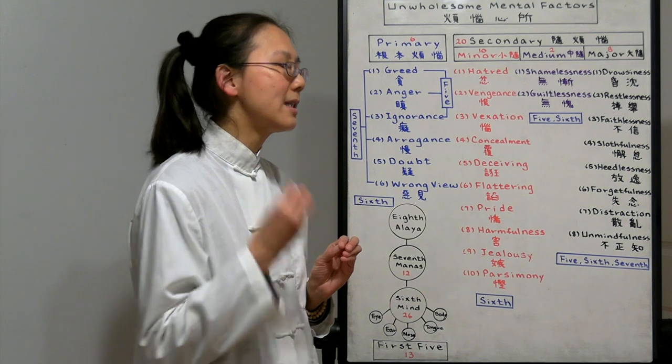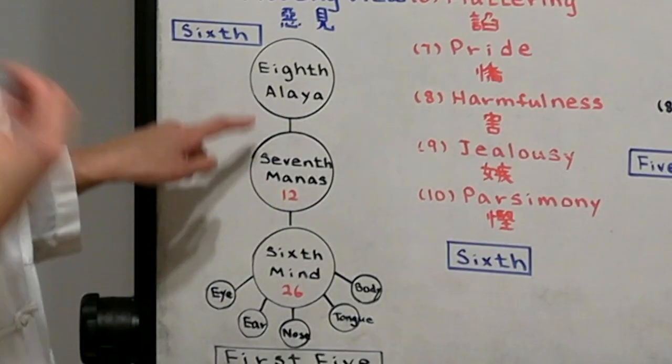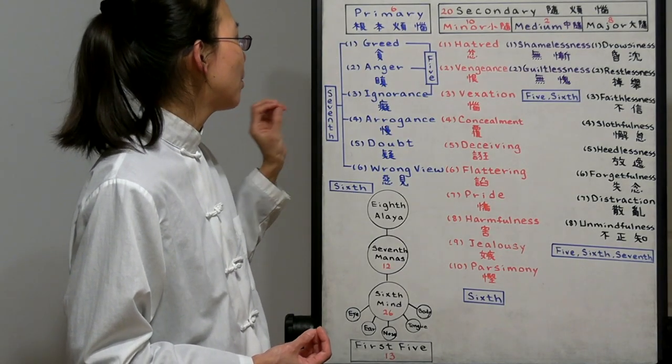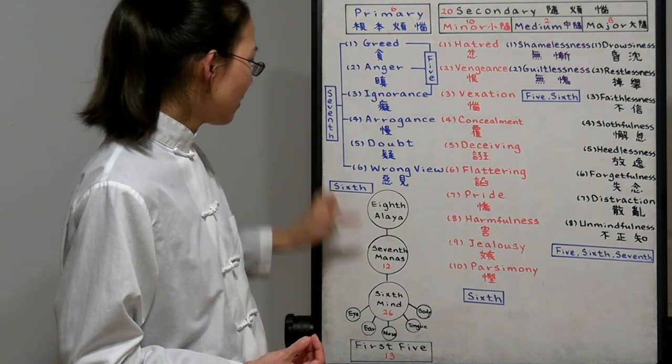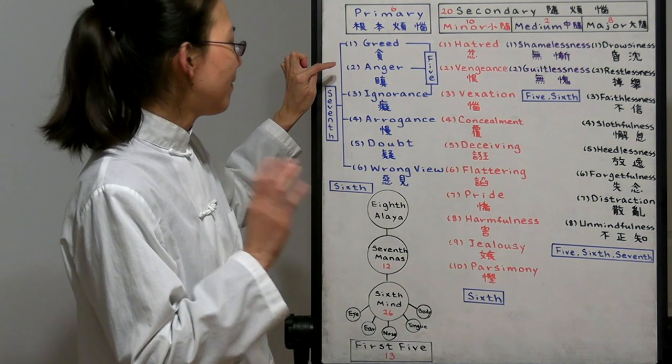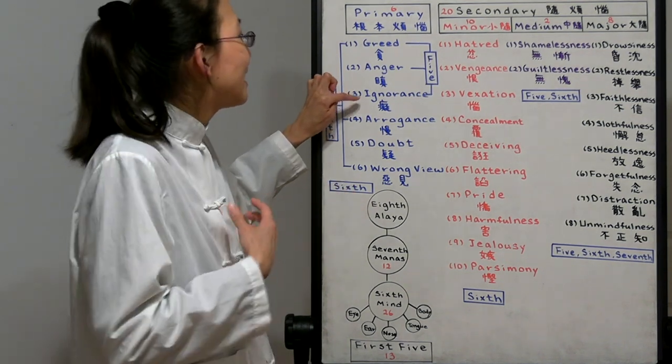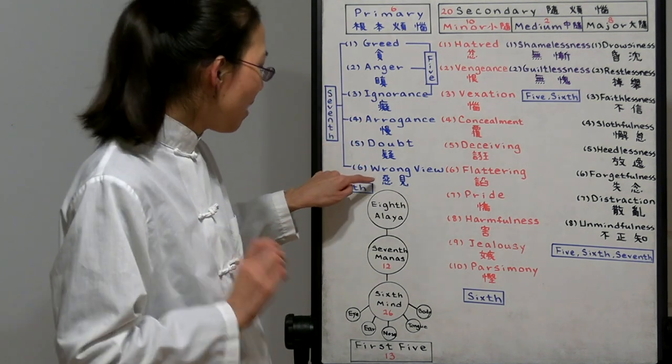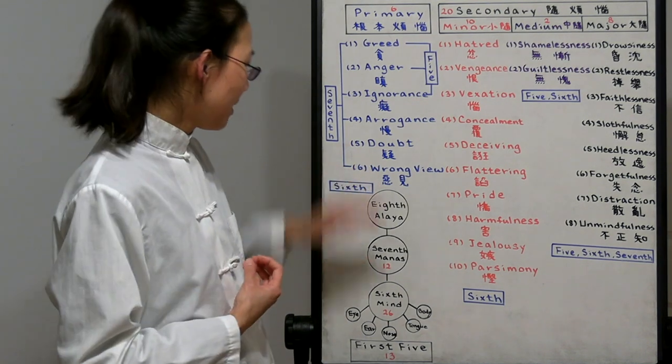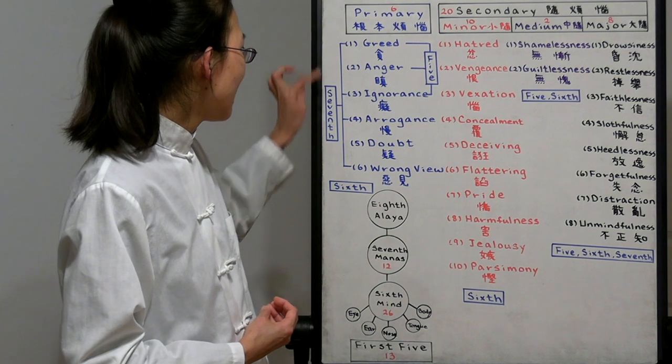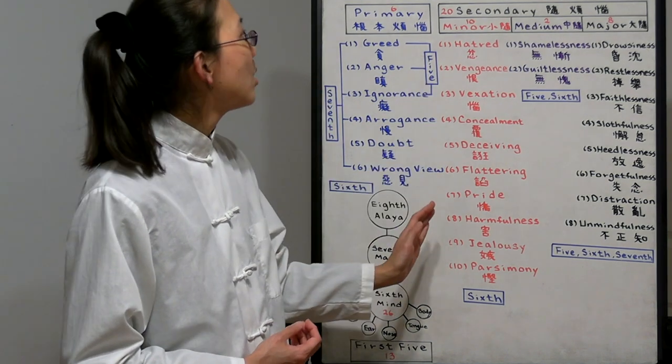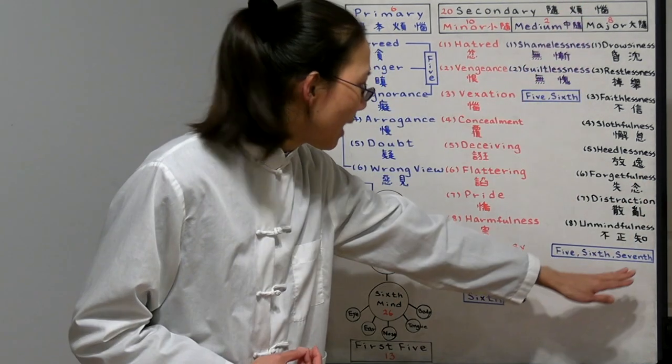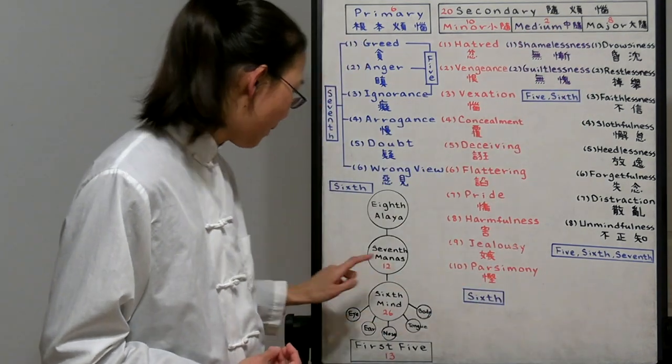The seventh consciousness, it has four out of the six primary unwholesome mental factors. It has greed, greedy about the self. It has no anger, because it's never angry about the self. It has ignorance, thinking there's a self. And it's arrogant about the self. It has no doubt, it has wrong view, wrong view about the self. Because it's only caring about the self, it only has four out of the six. It has no minor unwholesome mental factors. And it has no medium ones. It only has the major ones. Four plus eight, together for a total of 12.